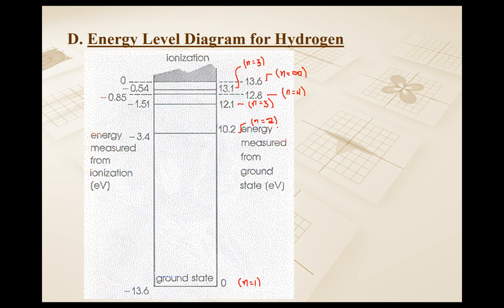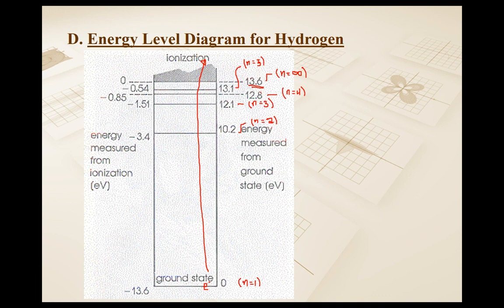If you look on the right-hand side of the diagram, we have an electron, and the energy to get to the first excitation state would be 10.2 electron volts. To get to the second excitation state you'd need 12.1. The third is 12.8. The fourth is 13.1. And to get the electron to completely leave the atom — ionization — you would need 13.6 electron volts of energy.